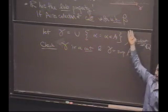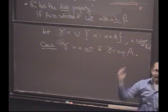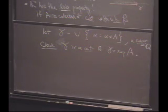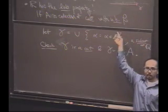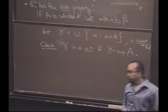It contains a bunch of alphas, each of which is not empty. Excellent. Why is gamma not everything? Because there's an upper bound. Notice if there wasn't an upper bound, gamma might have been everything.